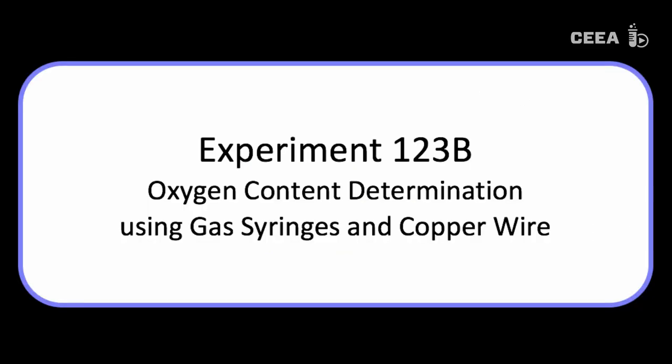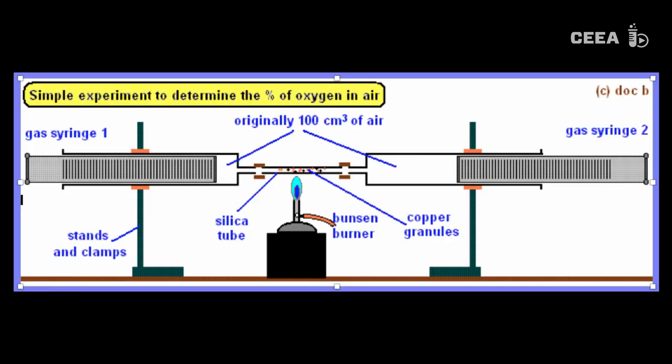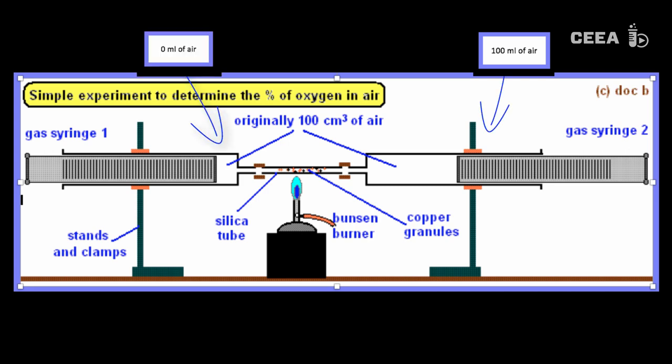Experiment 123b: oxygen content determination using syringes and copper. We start with an overview of all products needed to do the experiment. The first syringe is filled with 100 ml of air, the other is at zero.